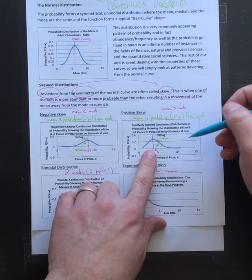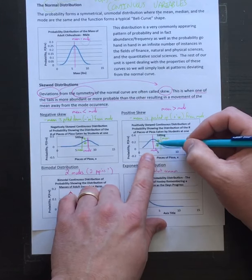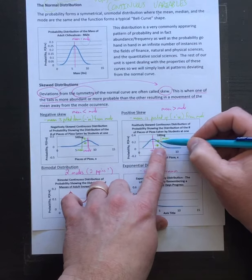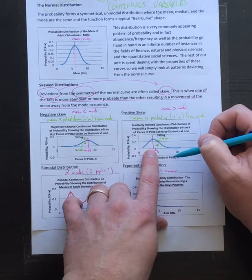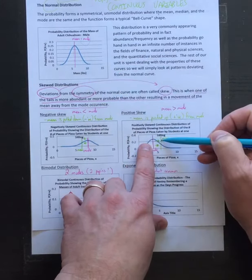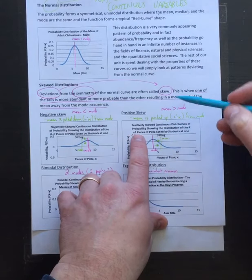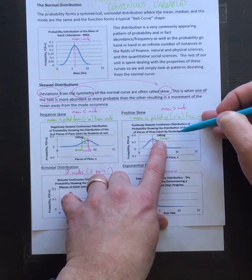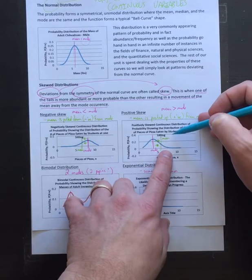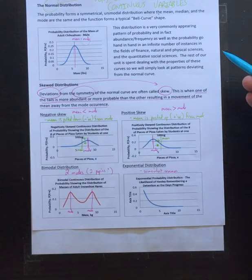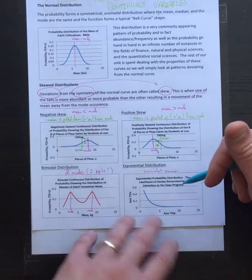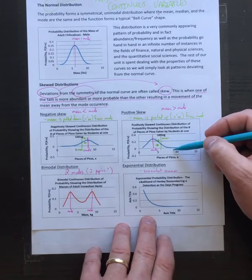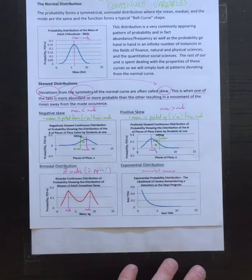A positive skew is the same thing going in the other direction. The mode sits there and the mean gets pulled upward because there are more values above the mode than below it - the mean and mode separate. This is a positively skewed distribution for the number of pieces of pizza eaten, but for a different population - maybe football players or very hungry teenagers. There'll still be some people eating a small amount, but a lot eating many pieces.